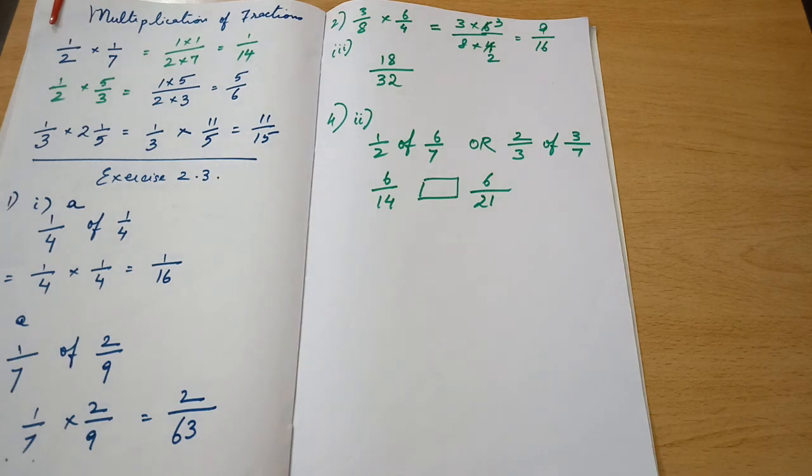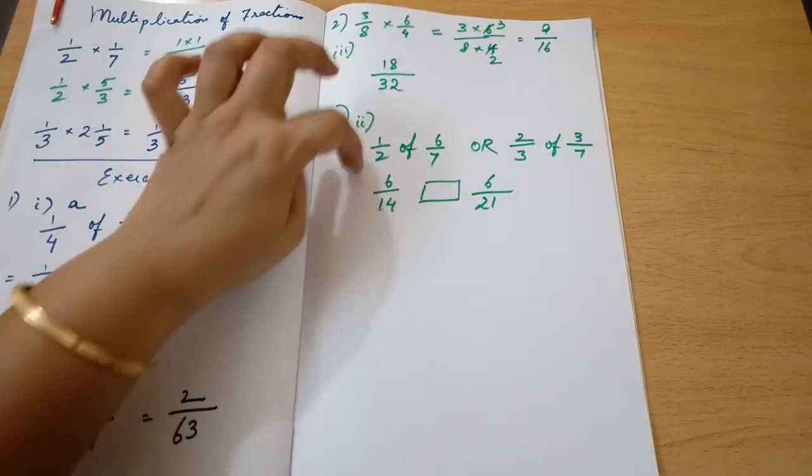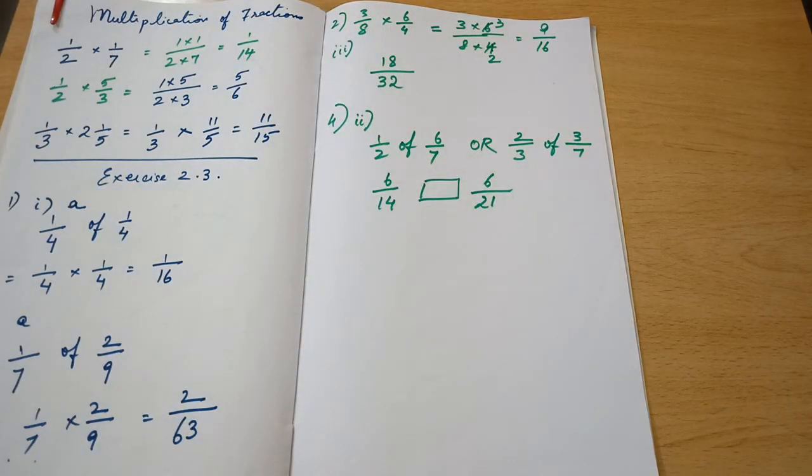Can you recollect what you did in class 7? How will you compare two fractions when their numerators are equal? Just try to recollect. Otherwise, I will help you with it.